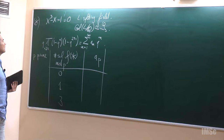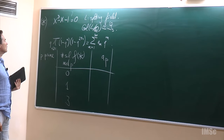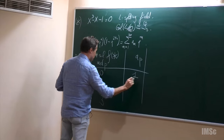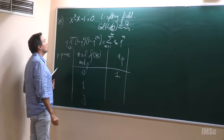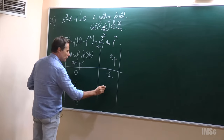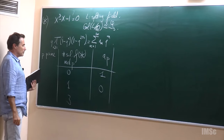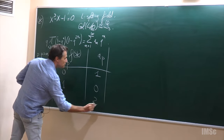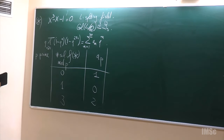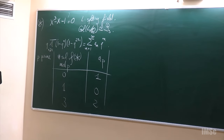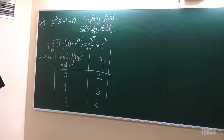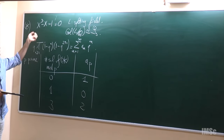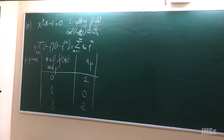When there are zero solutions, AP equals one. When there is one solution, AP equals zero. And when you have three solutions, AP equals two. So if you expand this, it gives you the number of solutions of this equation mod p — at least the p-th coefficient.